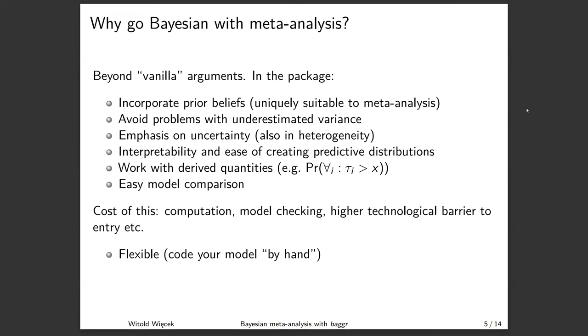Secondly, Bayesian methods avoid problems with underestimating variance across studies, when there are few studies especially. And while doing that, they also emphasize uncertainty in parameters. So it's not that heterogeneity is often big or small, but it's also that very often in meta-analysis, it's very imprecisely determined. So Bayesian models bring this fact to the forefront.